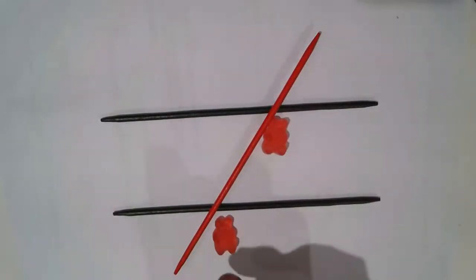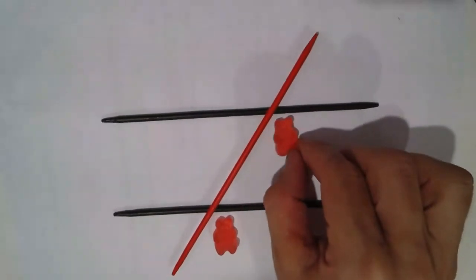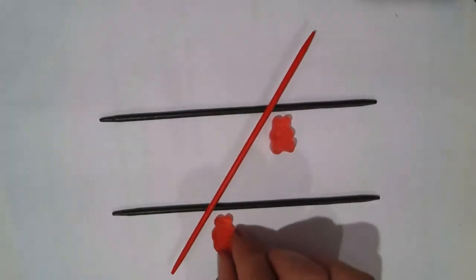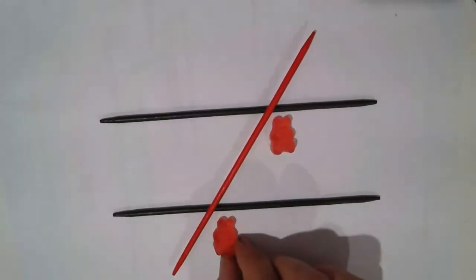And so on the transversal, this one is actually equal to that one. So if I know the value for gummy bear A, I then know the value for gummy bear B. That's for corresponding angles.